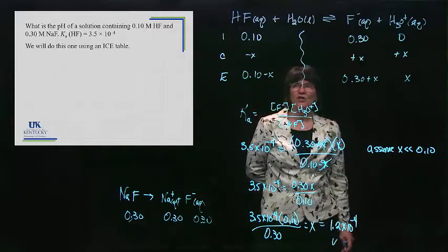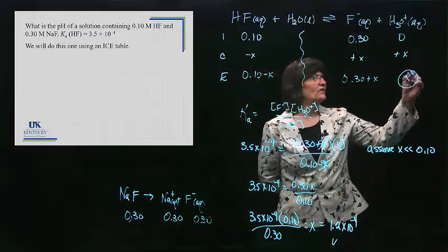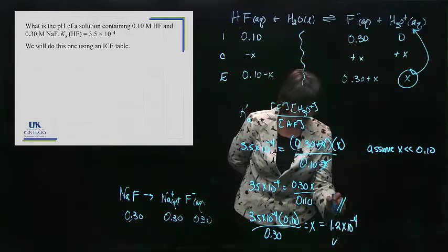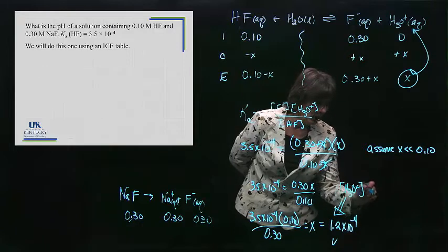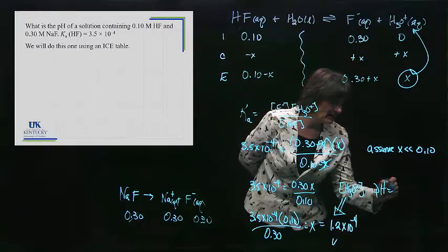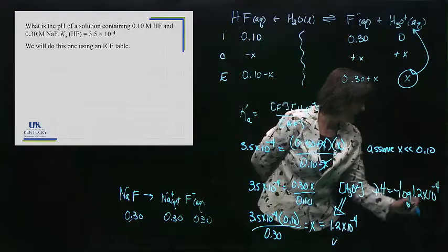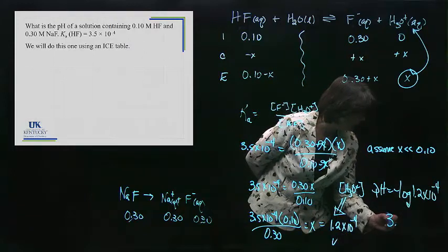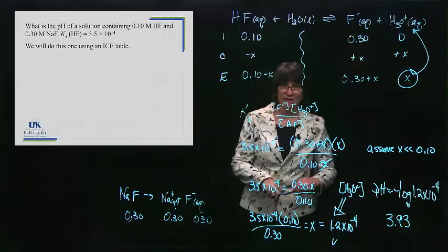Now we're ready to calculate the pH. The pH, well, let's think of what X is. X is the H3O plus concentration. Alright, so I know at this point the concentration of H3O plus. So how do I get the pH? It's the negative log of that number of 1.2 times 10 to the minus 4. I carried all my significant figures on my calculator, and I end up with 3.93 as the pH of that solution.